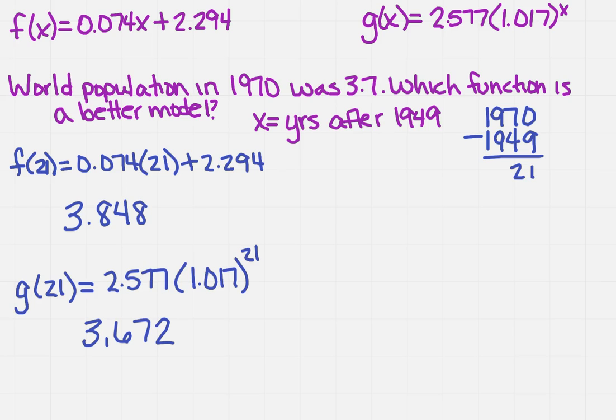If we look at rounding, we notice that the answer is to the nearest tenth. If I round this one to the nearest tenth, I get 3.8. And if I round the second one to the nearest tenth, I get 3.7.